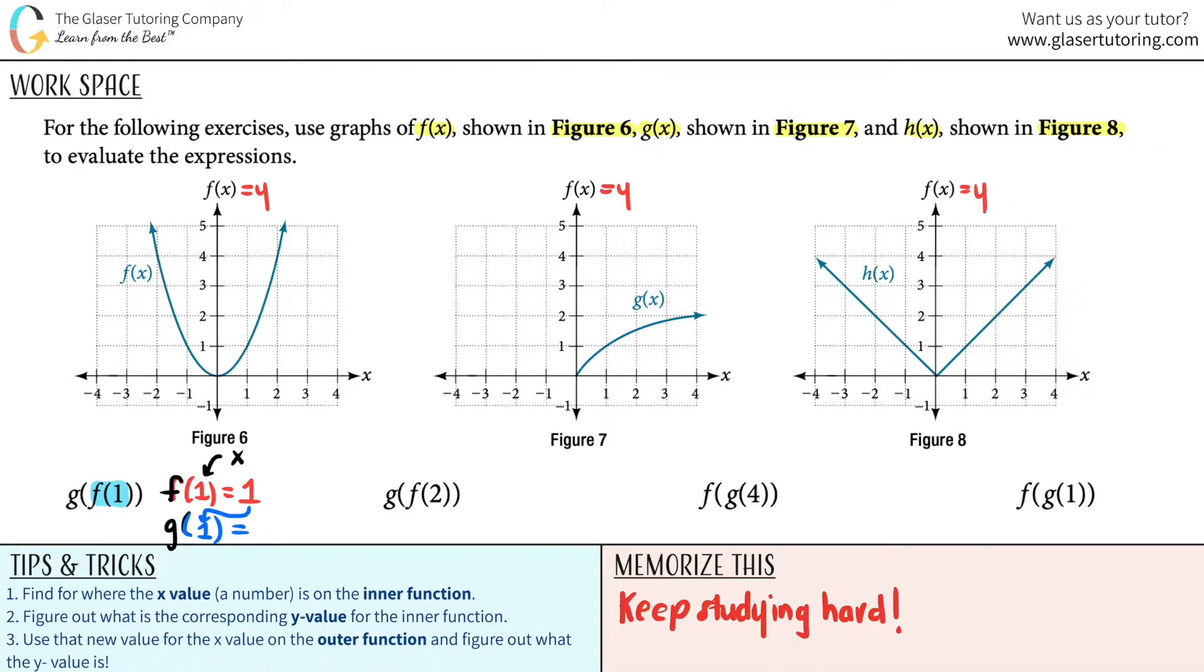So now, since this is in parentheses, this is the new x, and we're going to g land, the g function, which is this one. Okay, x of 1 right here, but you got to go all the way up to where it hits the graph. So that's this. And what's the corresponding y value? Oh, it's 1. So for this one, why am I saying some one all the time? But for this one example, we have ones all over the place. 1, 1, 1, and 1.